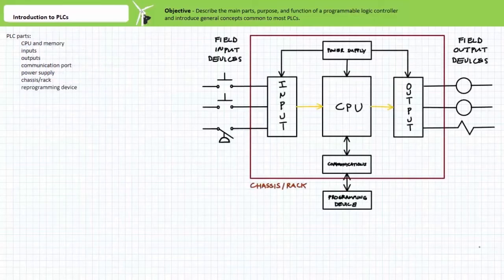A PLC is characterized by several parts, notably the CPU, inputs, outputs, a communication port, a power supply, a chassis, and a reprogramming device.